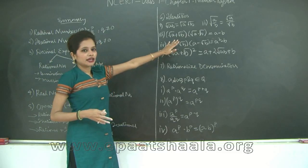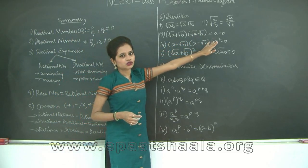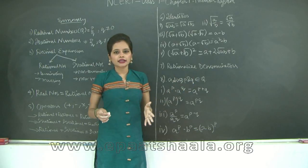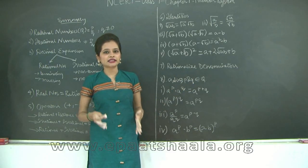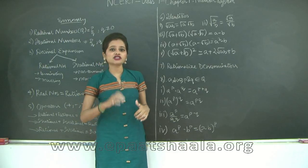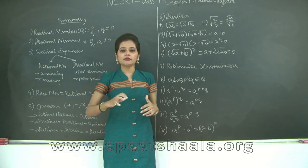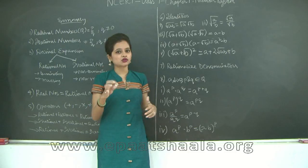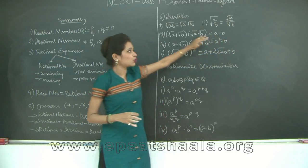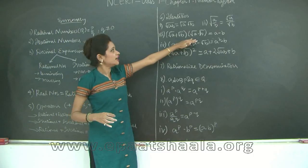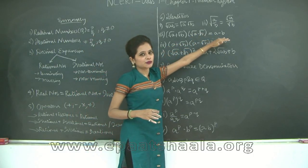Then you have (√a + √b)(√a − √b), which is similar to (a + b)(a − b) = a² − b². Here, (√a)² is a and (√b)² is b, so (√a + √b)(√a − √b) gives you a minus b.